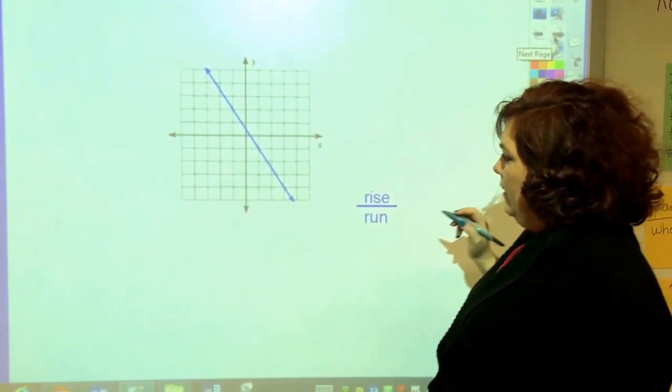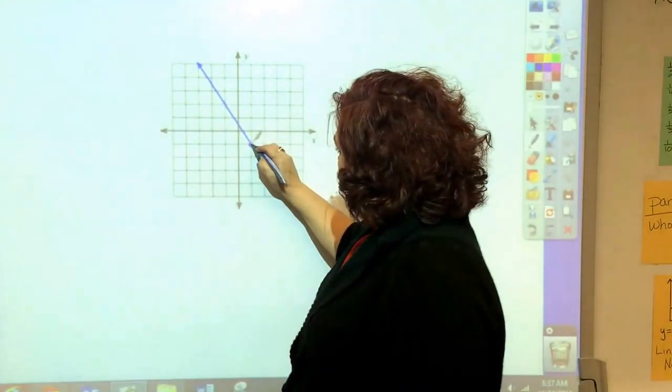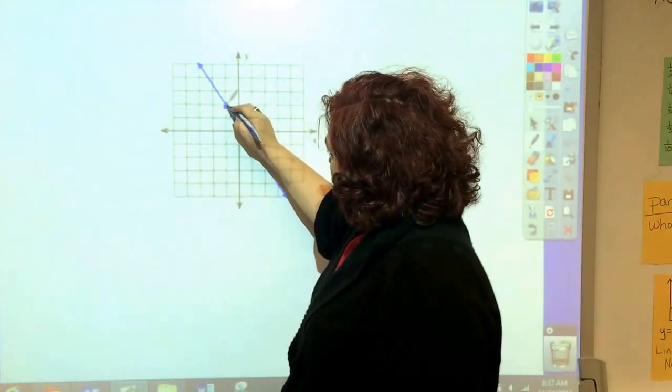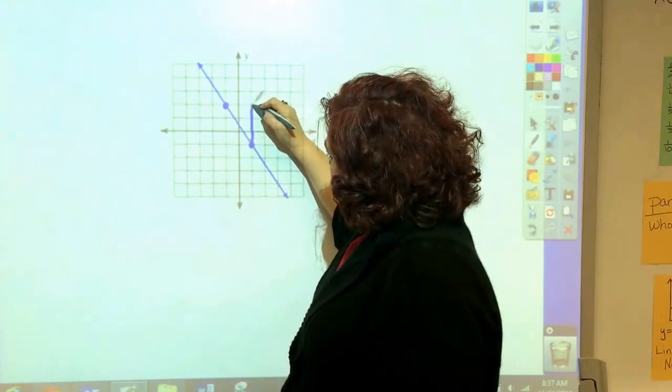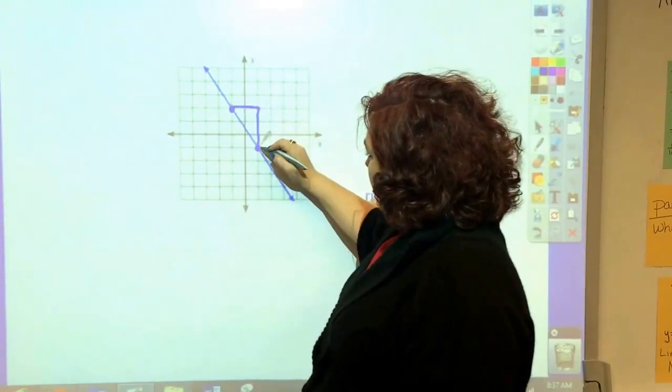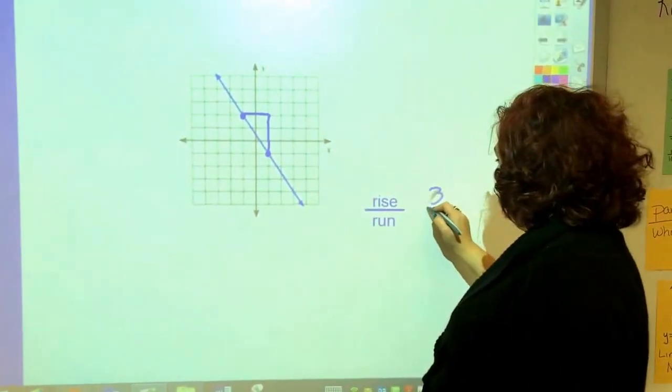Let's look at another one. Here's a point and here's a point. So I'm going to go rise over run. So this is 1, 2, 3. 3 is my rise.